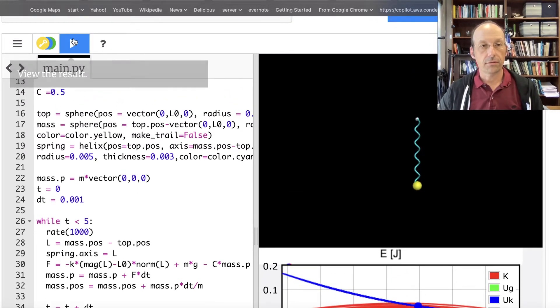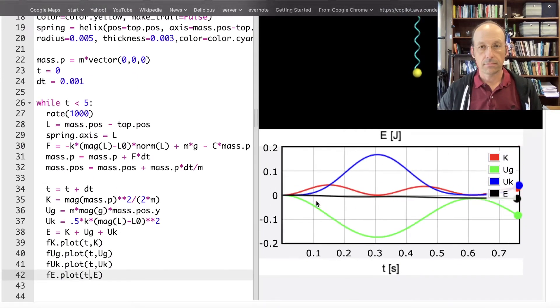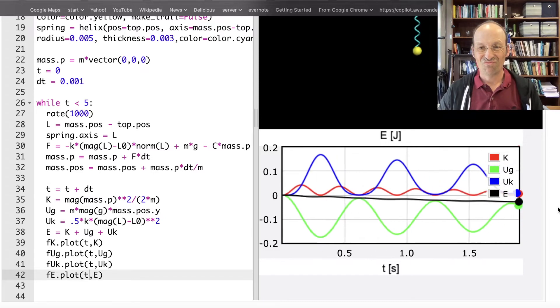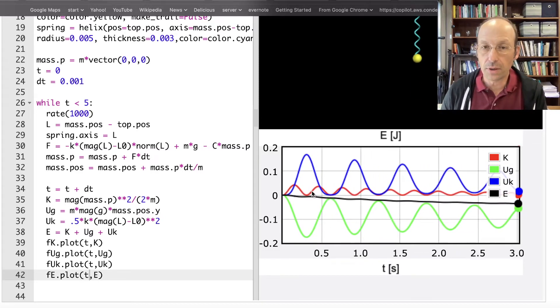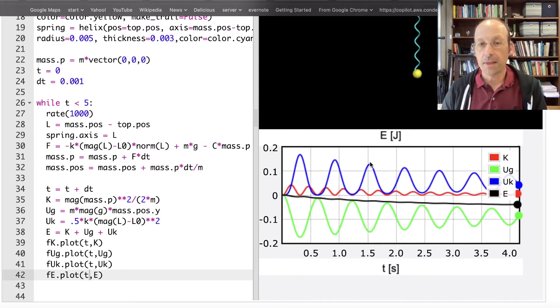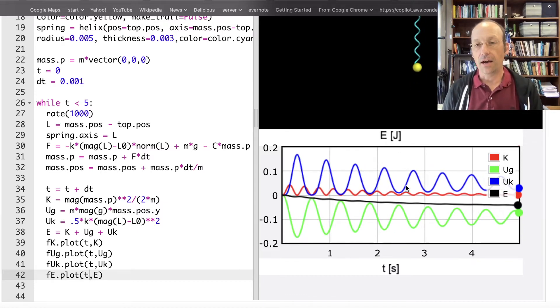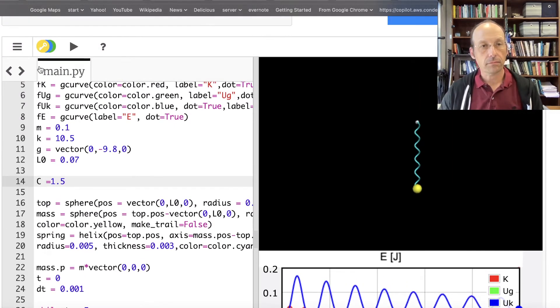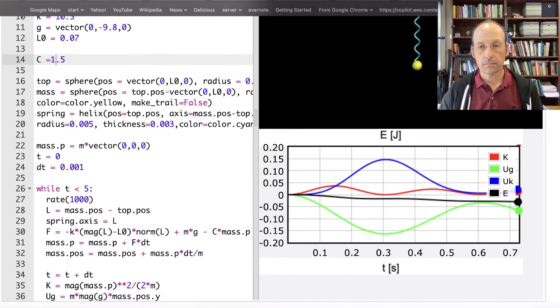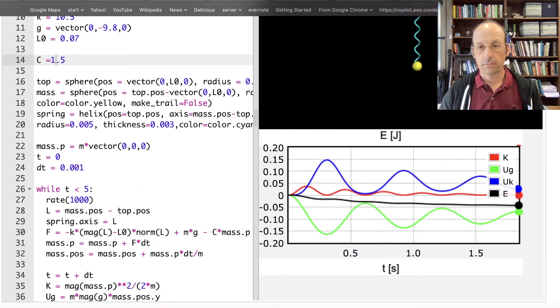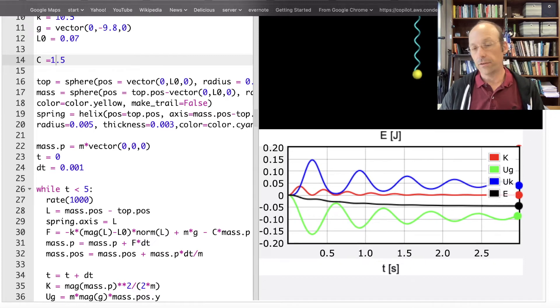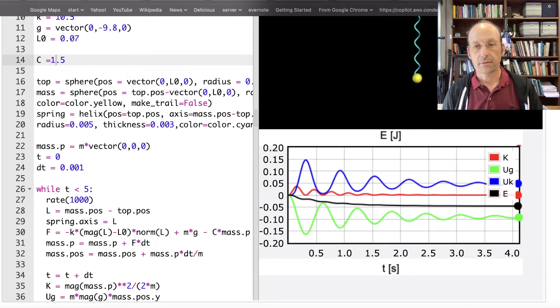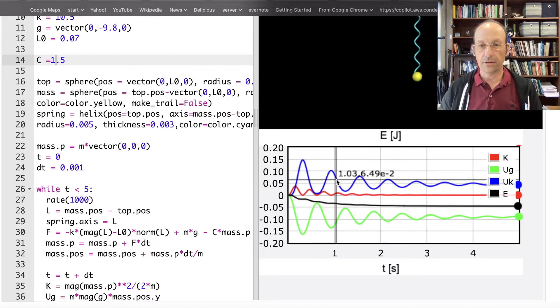Now let's run this. And you'll notice this energy value is indeed decreasing. Everything is decreasing. That's kind of cool. I can increase let's do this one more time. Let's put it at 1.5 drag coefficient. And eventually stop. See there it stopped. The kinetic energy is zero.